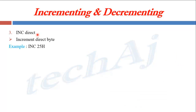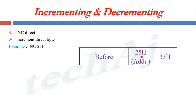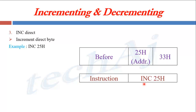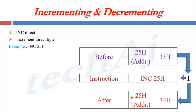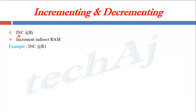The next instruction is INC direct, where direct is a RAM memory address. This instruction will increment the value present at that RAM memory address. Suppose address 25H holds the value 33H. When we execute INC 25H, the value at address 25H will be incremented by one, giving us 34H at address 25H.